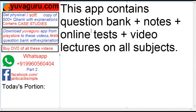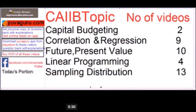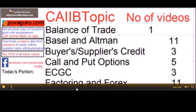This app contains question banks, notes, online tests, video lectures, and news. For CIB, the topics covered include capital budgeting, correlation, future and present values, linear programming, sampling distribution, balance of trade, ultimate score, buyers credit, suppliers credit, call and put options, ECGC, and factoring.